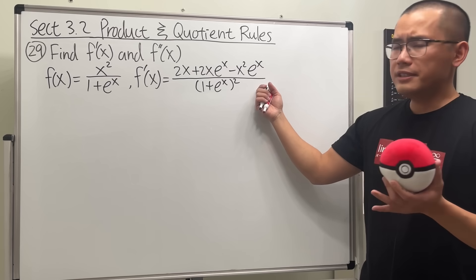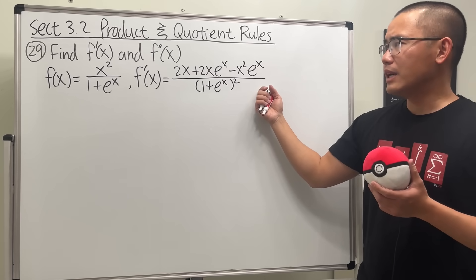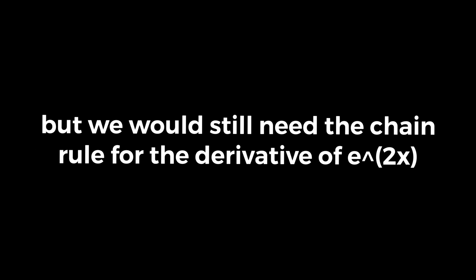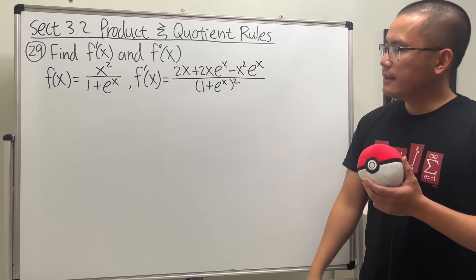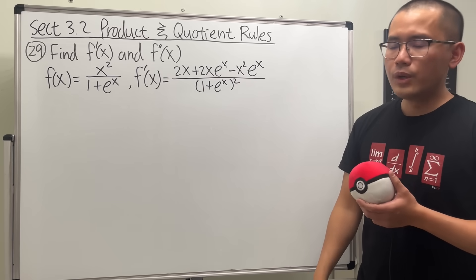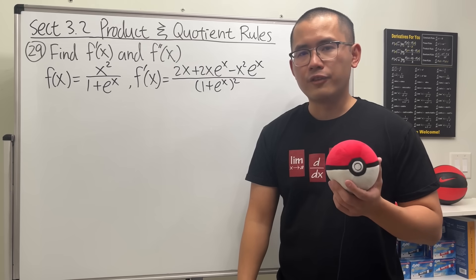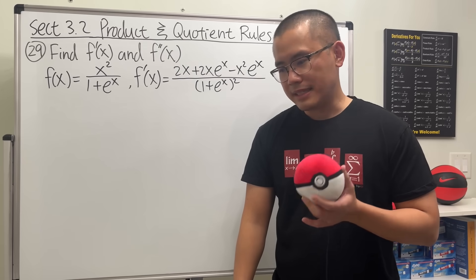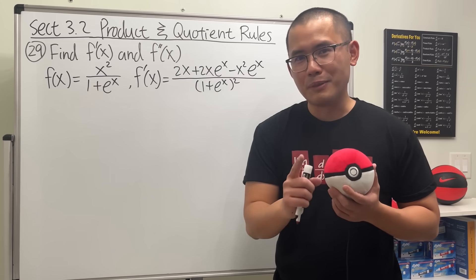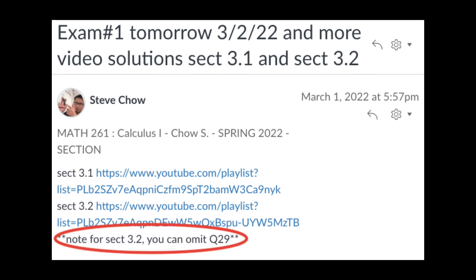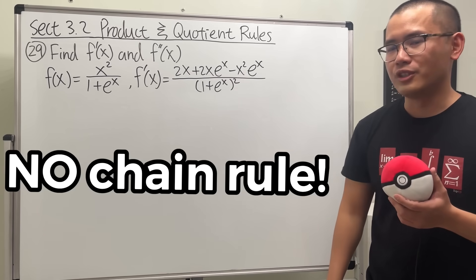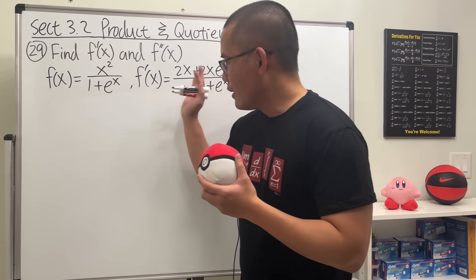But how are we going to differentiate this again? Not only is it long, but also we do not have to change it. Well, I checked the answer in the back of the book and they did provide an answer. Because I assigned it, I feel like I should do it — even though I told my students they don't have to. Let's just see how we can possibly do this, and we are not going to be using the chain rule. Here we go.